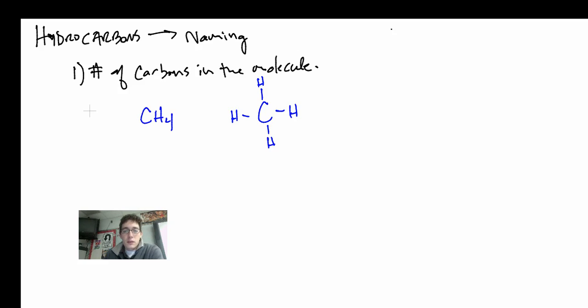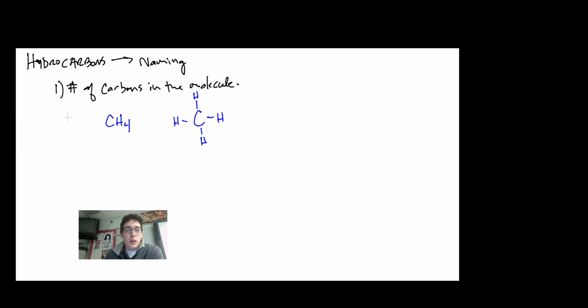And we use prefixes to show the numbers of carbons that there are. And the prefix for 1, so we'll do a chart over here in red. So a chart over here for one carbon is meth. And then we're going to put an ending on it, and I'll come to that in just a second.